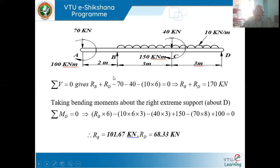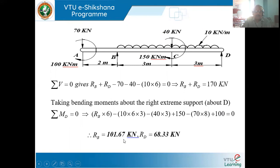Once we get Rb, we find Rd using the second equilibrium condition — upward forces equal downward forces. Rb plus Rd must equal 70 plus 40 plus 10 into 6 equals 170 kilonewton total downward. Subtracting 101.67 kilonewton, we get Rd equals 68.33 kilonewton.